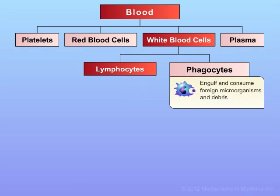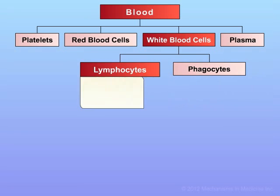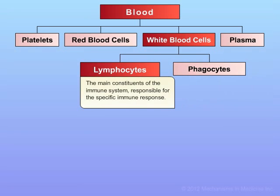Phagocytes are a major type of cell in the body responsible for immunity. These are responsible for the engulfment and consumption of foreign particles. The phagocytes can literally eat foreign bodies that include viruses. Lymphocytes are also a major component of the immune response.